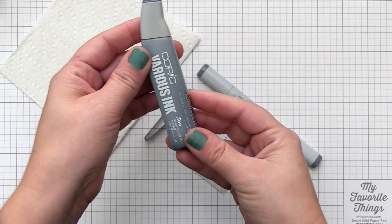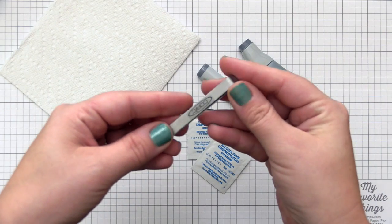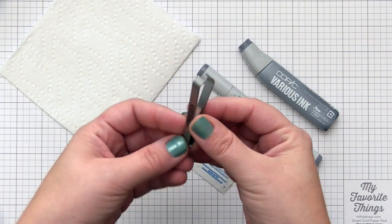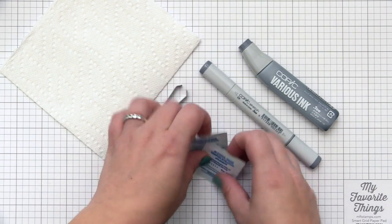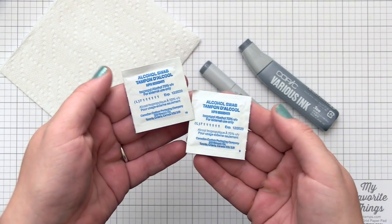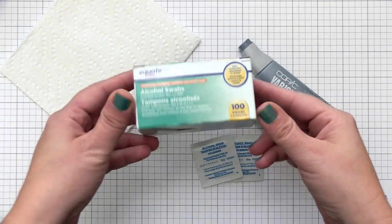Before we get to the actual refilling, I want to quickly go through the supplies I have on hand for marker maintenance. You'll need markers that need refilling along with their coordinating refill bottle. You know they coordinate by the caps—it will say the letter and number letting you know what Copic marker color that is.